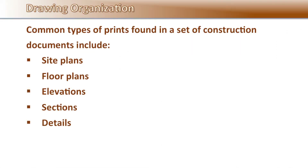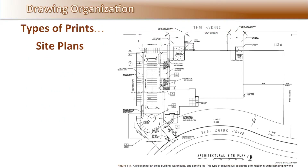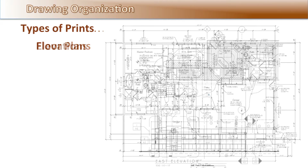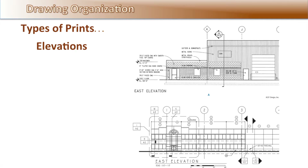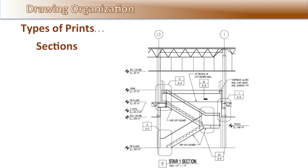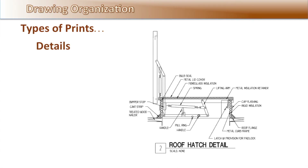Common types of prints found in a set of construction documents include Site Plans, Floor Plans, Elevations, Sections, and Details. Site Plans show the location and orientation of the building on the property. Floor Plans show the layout of the overall building. Elevations show the exterior features of the building architecture and the exterior materials used in construction. Sections show the building as if it were cut apart at the location indicated. Details show large portions of the building components and features in more detail.